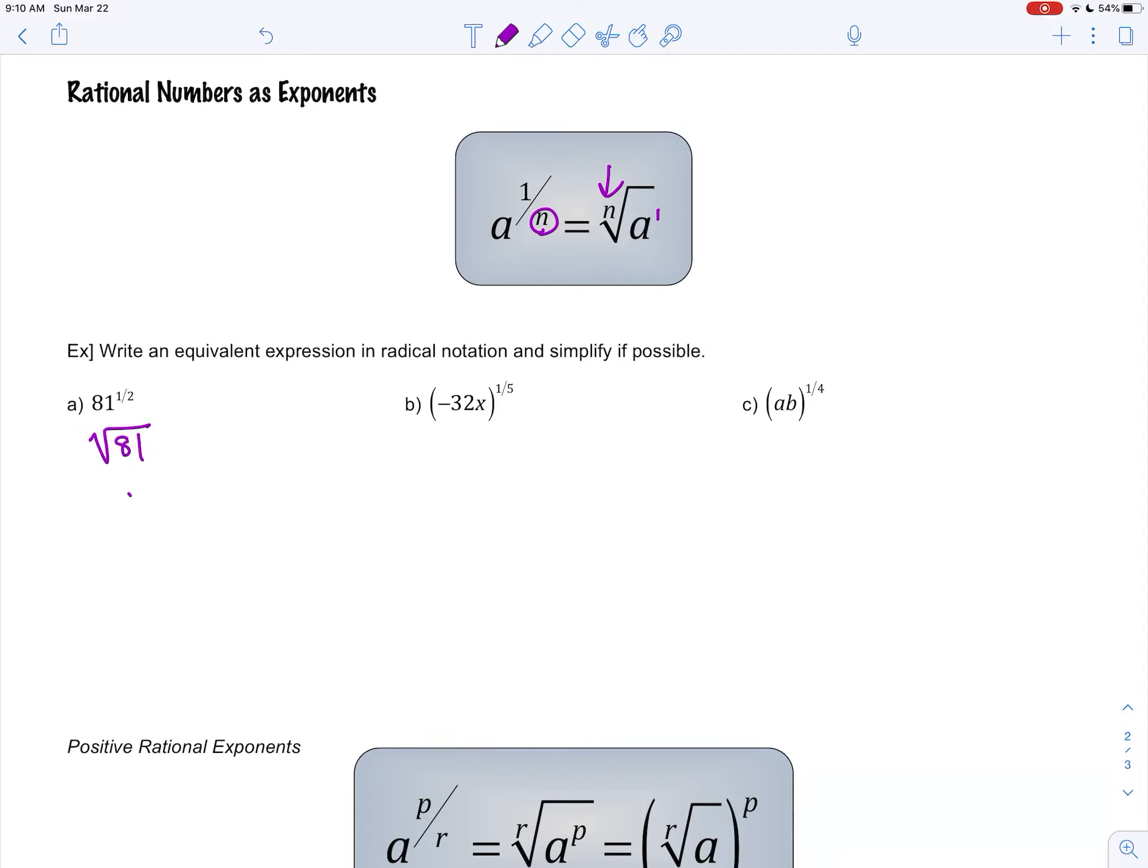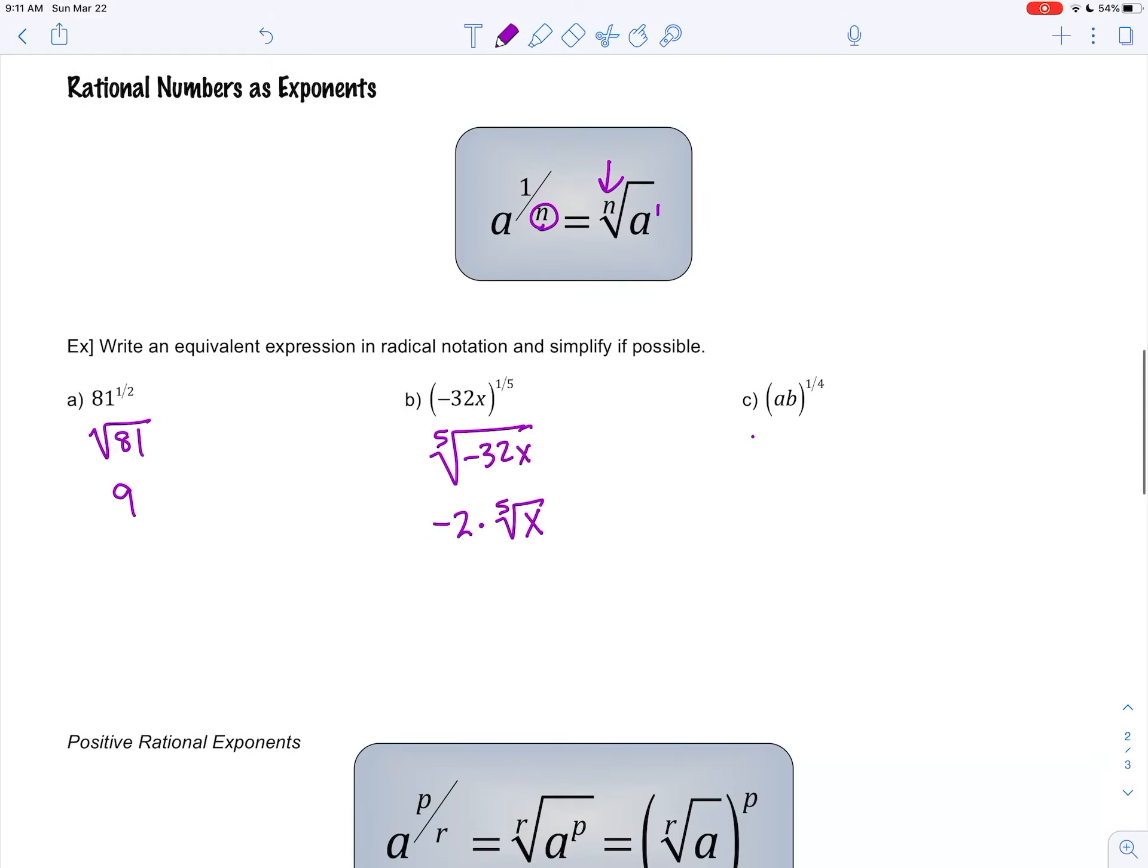81 to the 1 half. That's the square root of 81, which we can simplify. It's 9. Negative 32x to the 1 fifth. So there's the 5th root of negative 32x. I know the 5th root of negative 32 is negative 2, and then the x has to stay inside the radical. ab to the 1 fourth power would be the 4th root of ab, which we cannot simplify further.